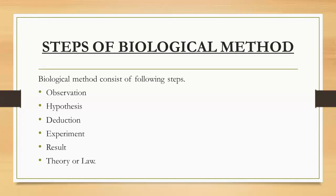Now come to experiment. An experiment basically involves two groups: an experimental group and a control group. By the help of practical results, we show results, which leads to result and theory. If our hypothesis is proven correct through repeated experiments, then what we call it is a law and theory.